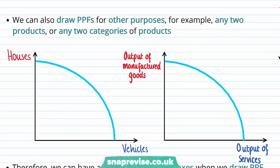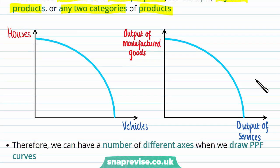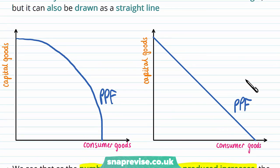It's worth noting there are other uses for PPF curves — we can draw them for any two products or categories of products, for example houses or vehicles, or outputs of manufactured goods and outputs of services. These examples show the trade-off between two different goods. In economics we're typically drawing PPF curves for the whole economy with axes for capital and consumer goods. You can see that we trade one off for the other — if we are on our PPF curve, we can't increase both at the same time; we have to choose how much we want of either.